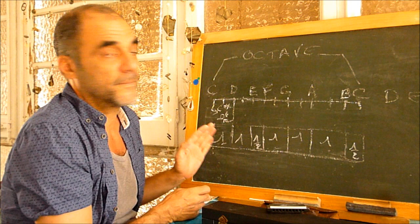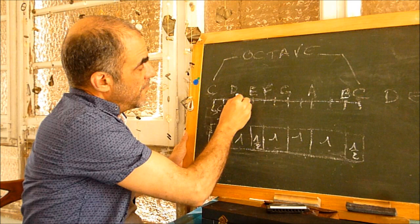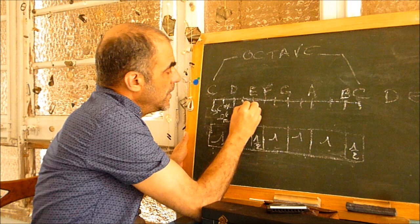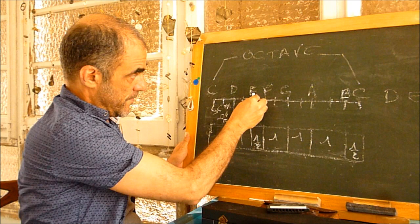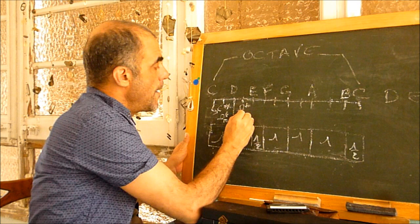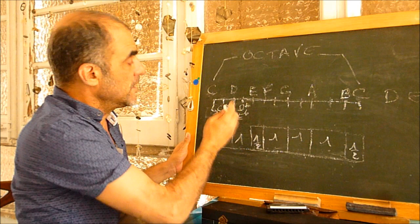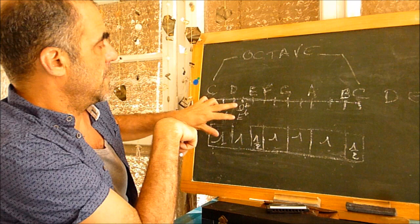So we can write this note two ways. To add one half tone to D, we could call it D sharp. Or we could call it E flat — taking off one half tone from E. D sharp or E flat — it's the same note, just two ways of writing it.